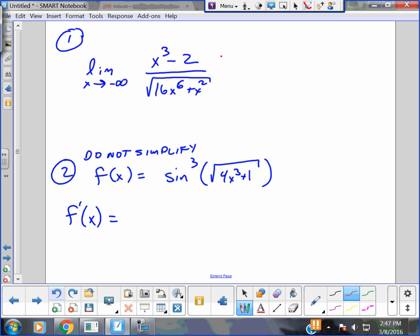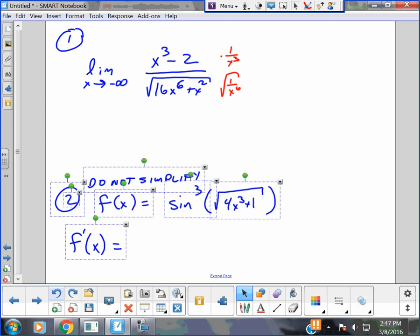The way I get there is I multiply by one over x cubed on the top and one over x to the sixth, which is one over x cubed on the bottom. And when I do that, a lot of you guys just skip that step. I get that.